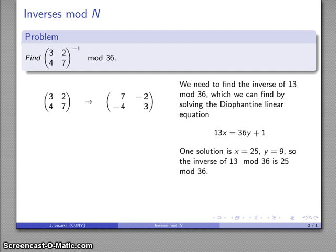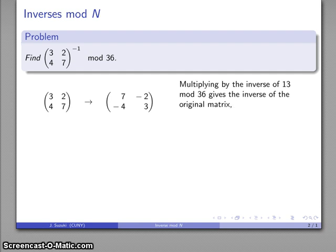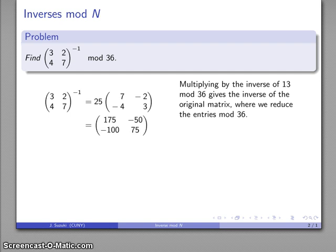And so I'll take my matrix and multiply it by 25 to get the inverse of the original matrix. And remember, we're working mod 36, so there really isn't any reason to carry around large numbers, and I'll reduce those, and I'll get the inverse of the matrix mod 36.